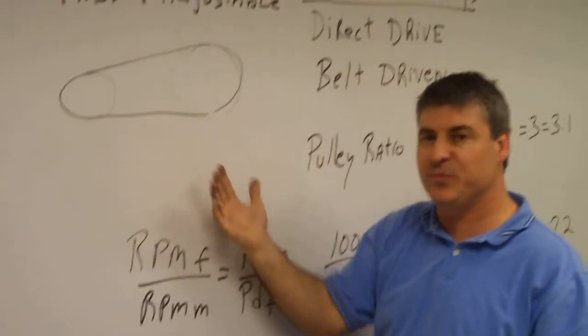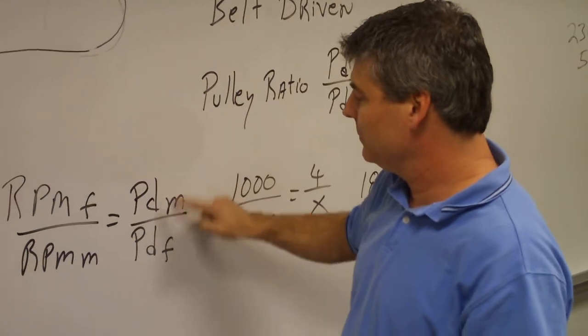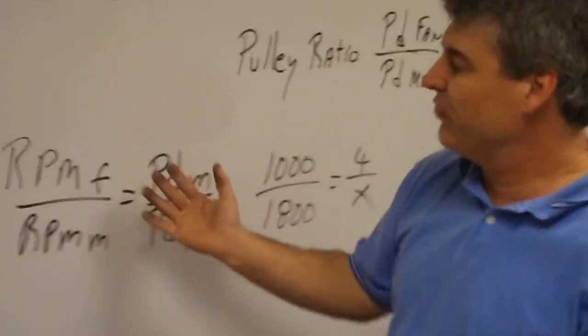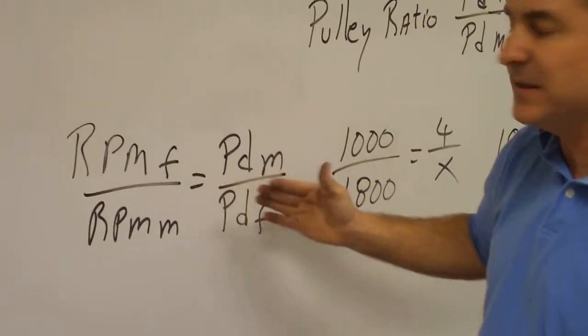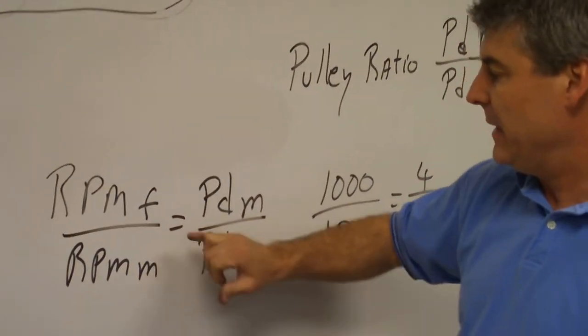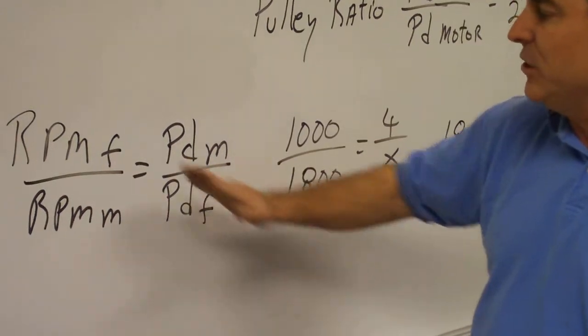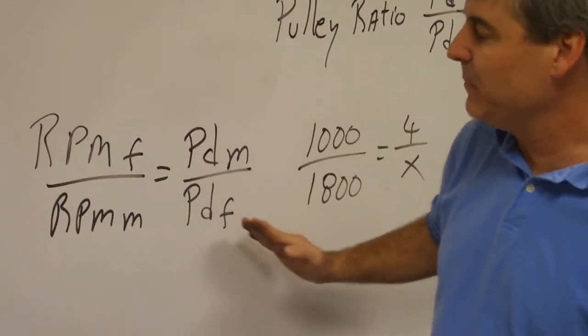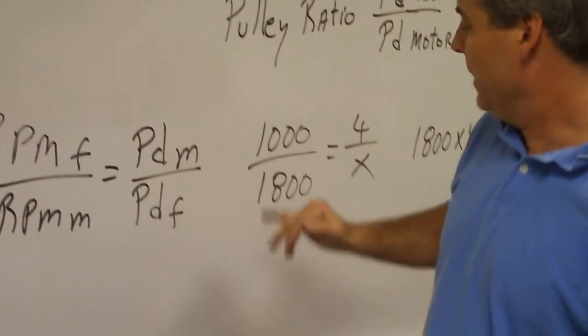Since we're talking about fan speed, there's a direct relationship between the pulley diameters and the RPMs. This is a calculation here to find out—if you know three of these and you want to find out the remaining factor, you can use this formula. The RPM of the fan over the RPM of the motor is equal to the pitch diameter of the motor over the pitch diameter of the fan. You would just fill in what you know and put an X where you don't know it, and you simply cross multiply and then divide.